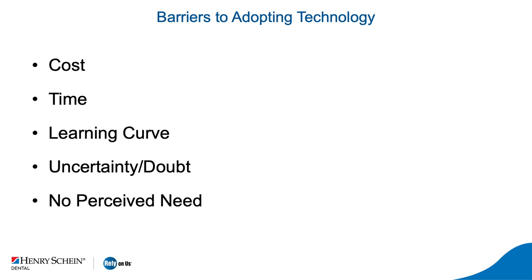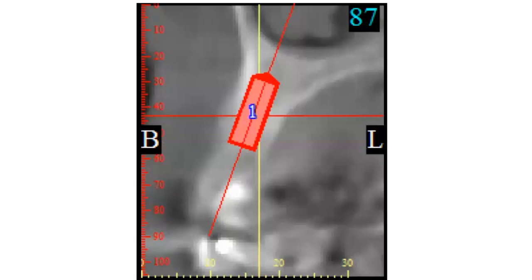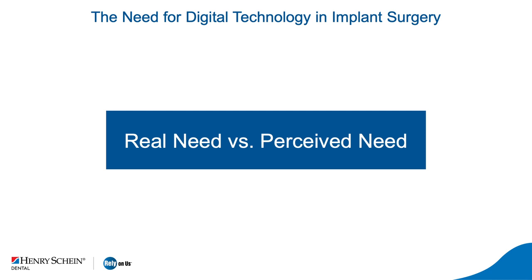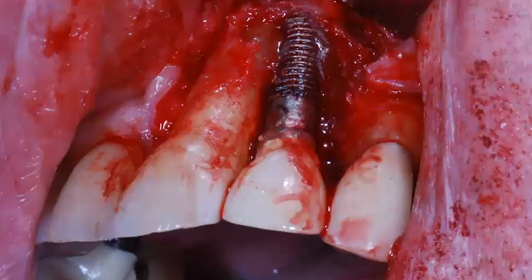There's often a big gap between real need versus perceived need when it comes to digital technology and implant surgery. If we look at classic CBCT images and planning software, it can look very rudimentary — the implant is just a long rectangle, not even looking like an implant. What if we did it the old fashioned way, drilling halfway and taking an x-ray to check position? People debate this all the time in implant surgery circles.